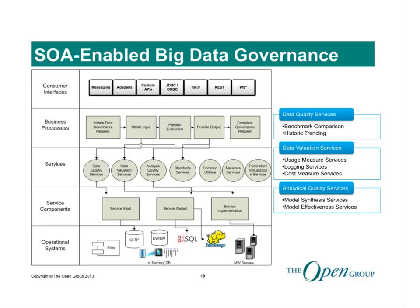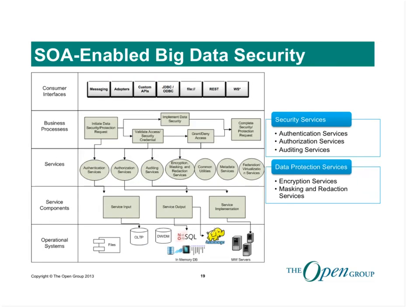On security — one of the most important capabilities for any data management solution, especially big data — security services include two main categories: services to ensure the right level of data access, such as authentication, authorization, and auditing (the AAA security framework), and services to provide data protection such as encryption, masking, and redaction.